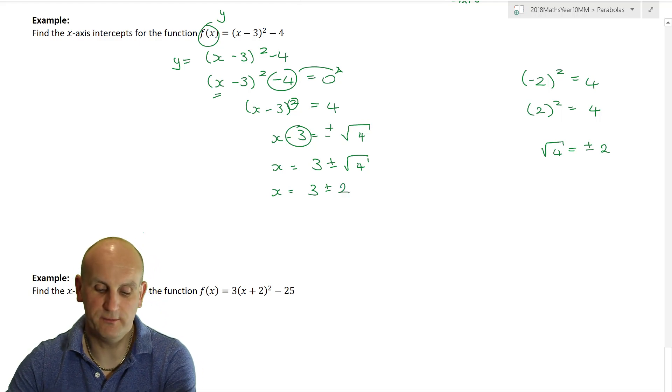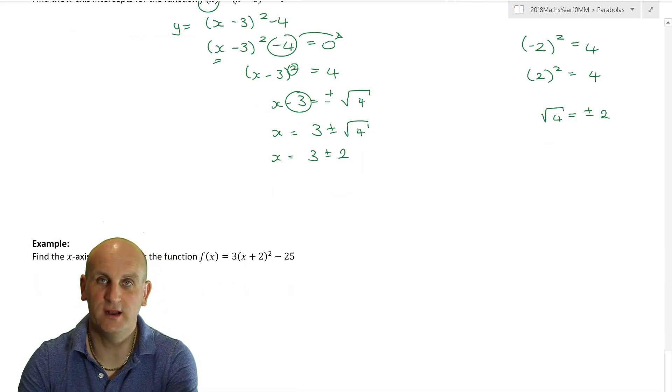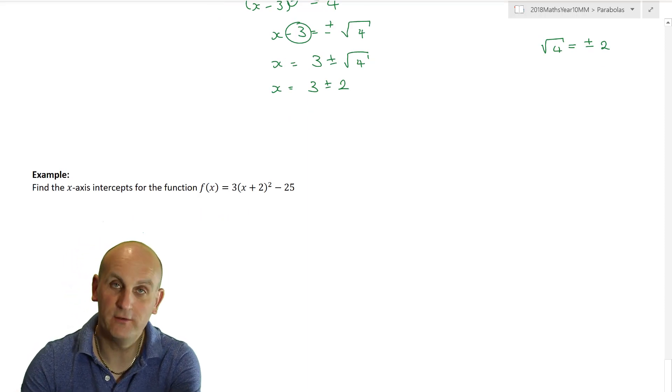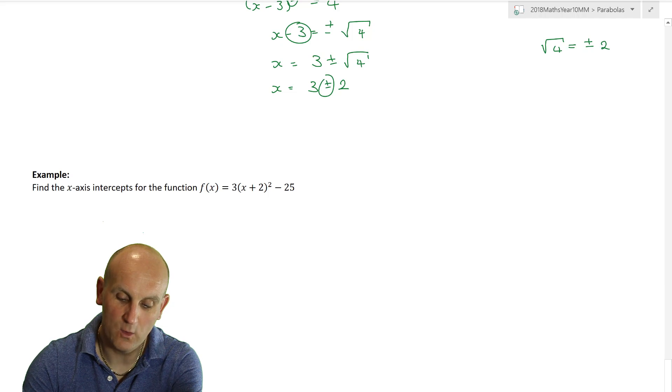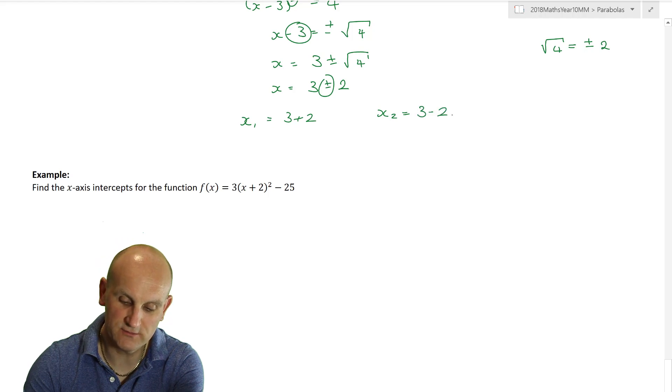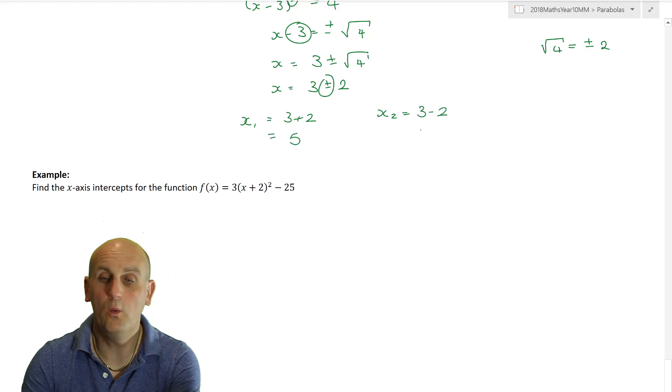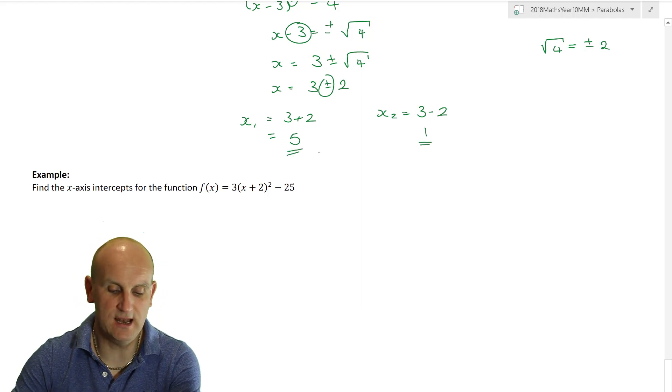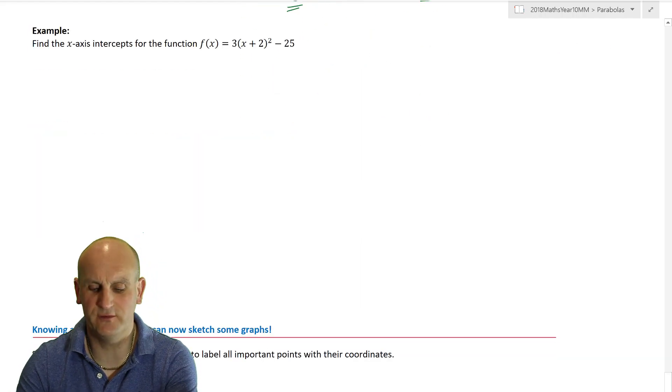So now I'm going to move this minus 3 over and make it 3 plus or minus the square root of 4. Well, we know what the square root of 4 is. It's 2. So x becomes equal to 3 plus or minus 2. What's the plus or minus mean? Well, remember that whenever we have a quadratic, we should be expecting either 1 or 2 crossing points. And that tells me what my 2 crossing points are. So my x1 is 3 plus 2. And my x2 is 3 minus 2, which gives me 5 and 1. See, I think this is awesome. I love doing these, particularly completing the square form because it's so easy.